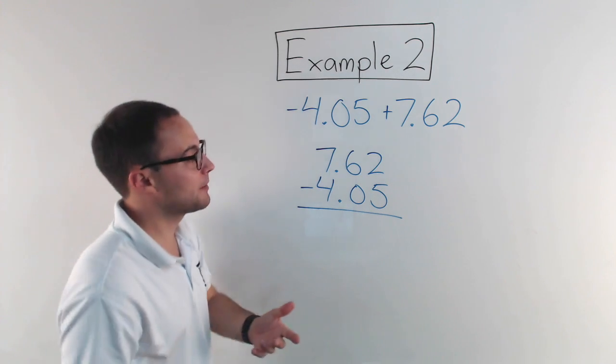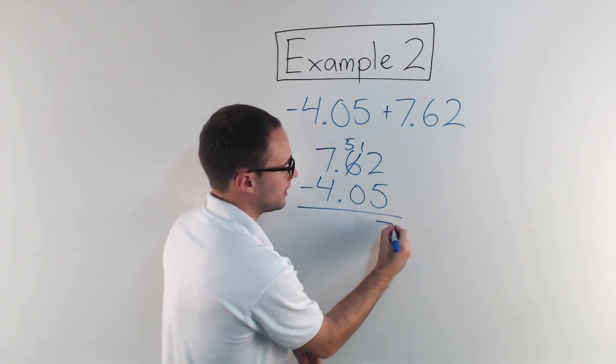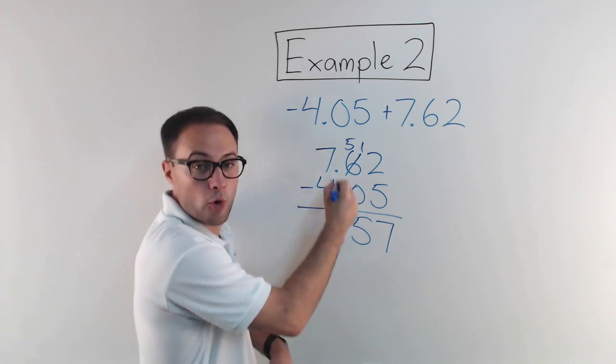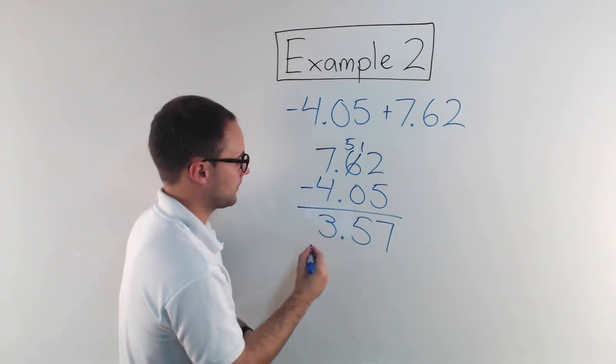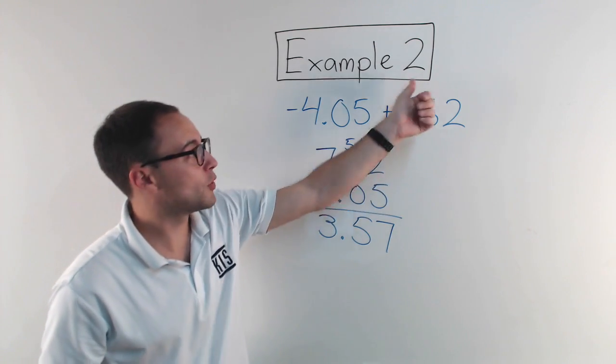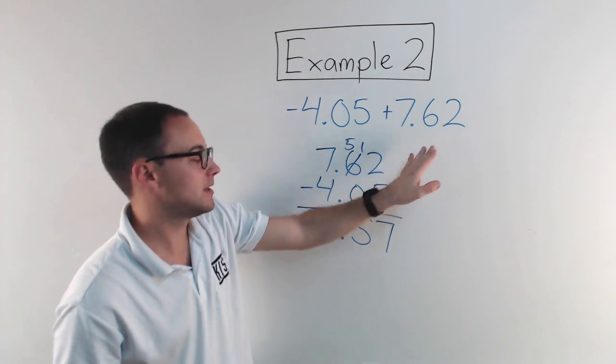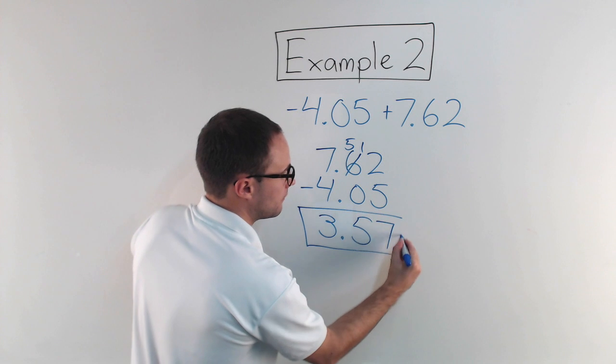So seven-point-six-two minus four-point-zero-five. Notice my decimal points are lined up, and I just subtract. I'm going to have to borrow. That becomes five-twelve-seven-five. Decimal points are staying in line, and that's seven minus four is three. And I look, seven-point-six-two was the greater absolute value. That was positive, so my answer is positive. Three-point-five-seven.